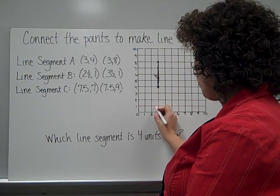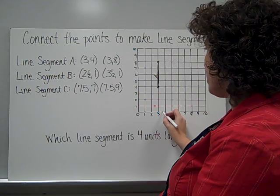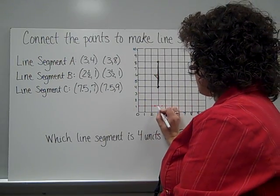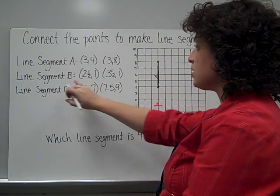2 and 1 half, 1. To 3 and 1 half, 1. Connect those points and call this line segment B.